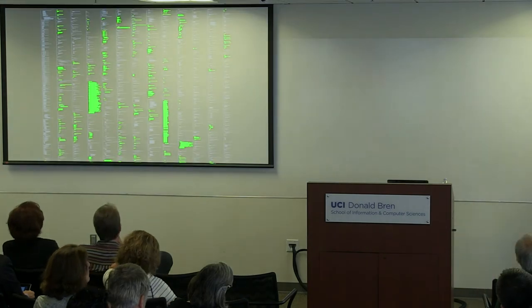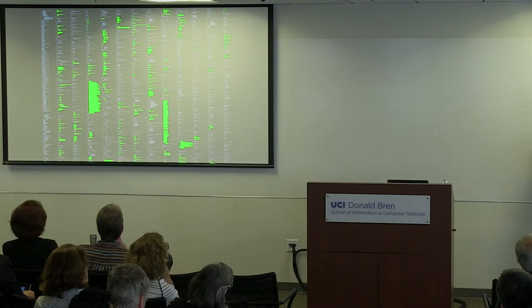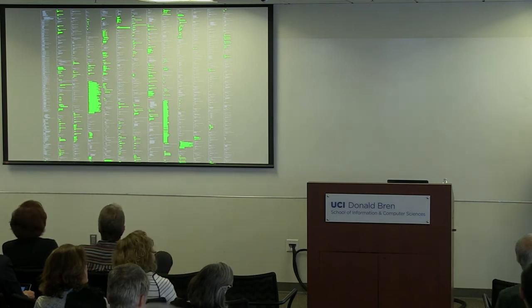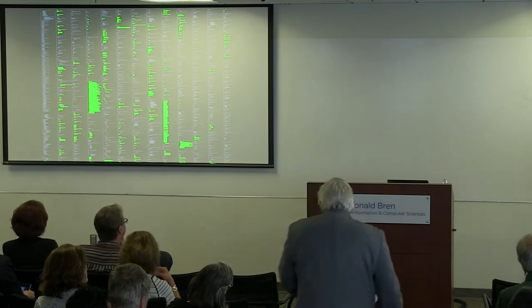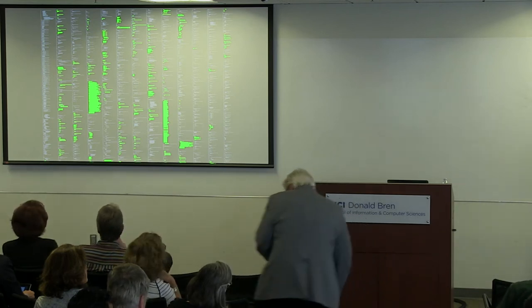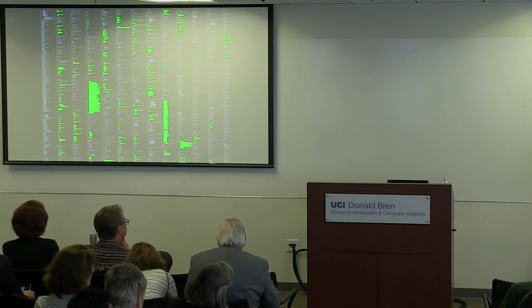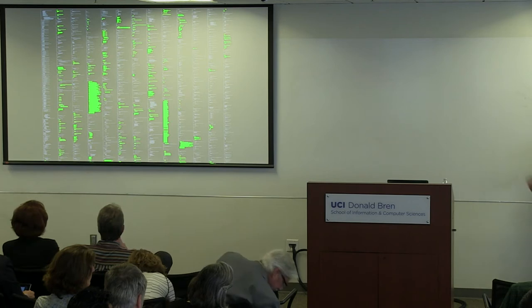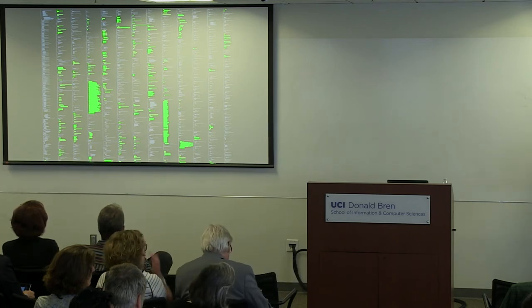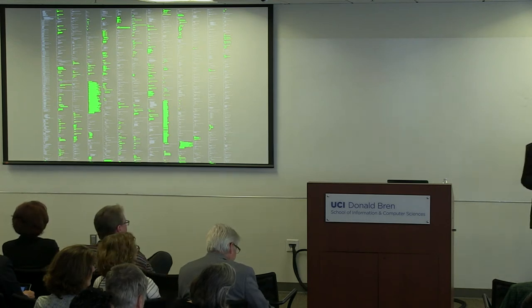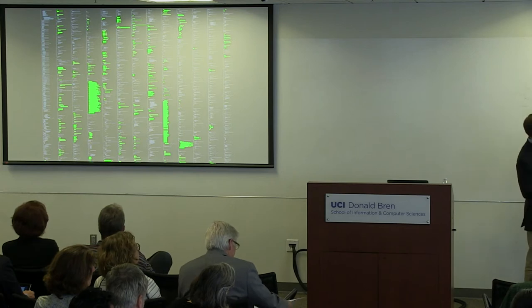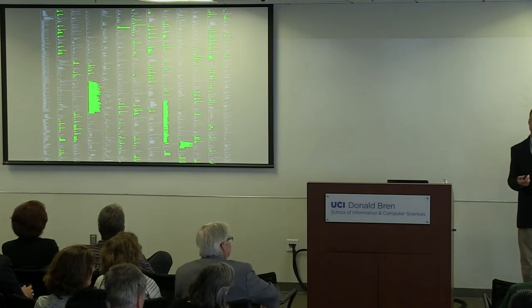This is a visualization of a large software system — we have thousands of lines of code. This is a zoomed-away view of the code, and you can still see the indentation and structure. The green lines are lines of code that were executed, colored green because they were executed by a passing test case. Looking at a different test case, you can see it executes different lines of code.